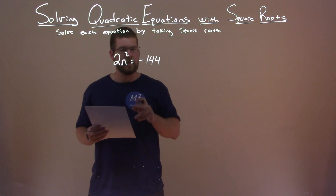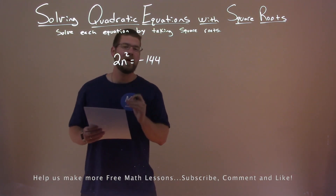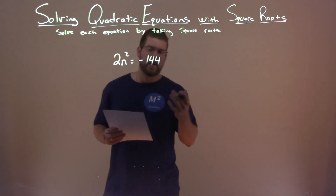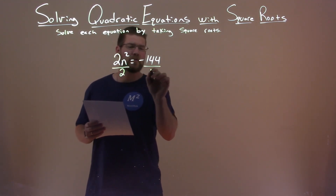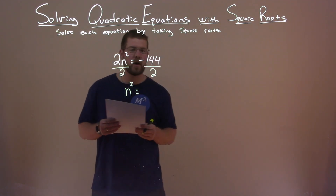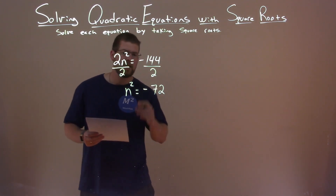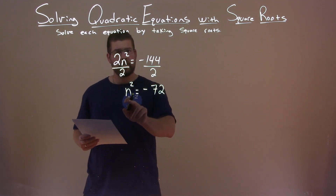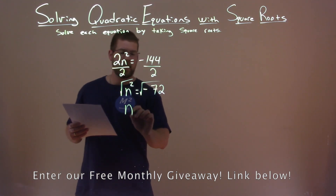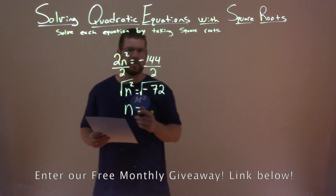We're given this problem: 2n squared equals negative 144, and we want to solve this equation by taking square roots. I see 2 times n squared, so to get n by itself, I have to divide both sides by 2. That gives me n squared by itself, and negative 144 divided by 2 is negative 72. So now we take the square root of both sides — but wait, we have the square root of a negative number.